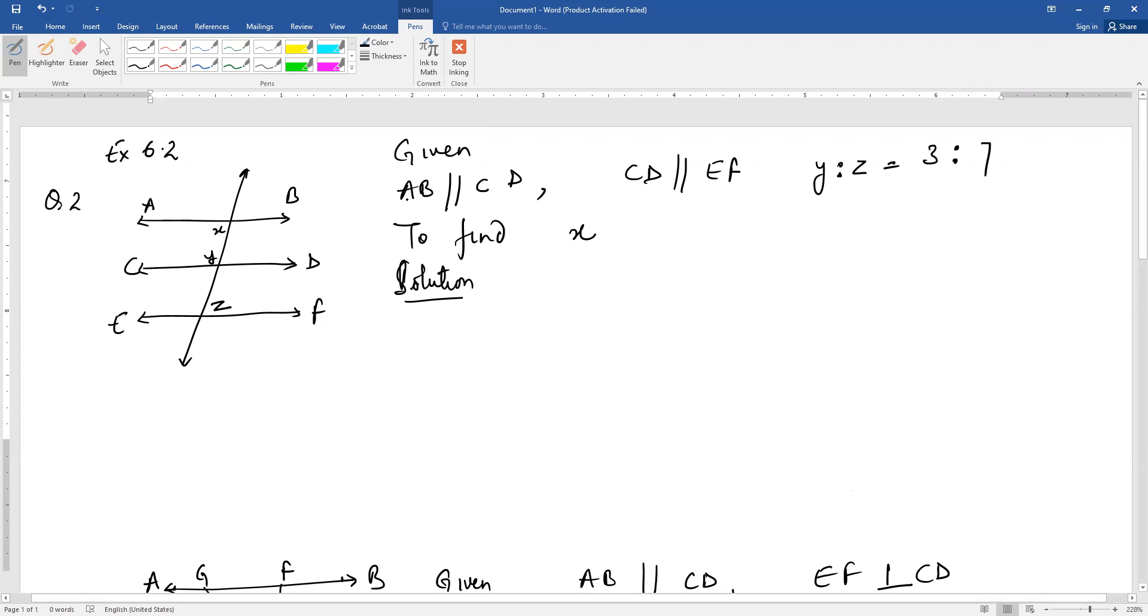You are given the figure. You are given AB is parallel to CD and CD is parallel to EF, and the ratio of y to z is 3 to 7. You have to find angle x.